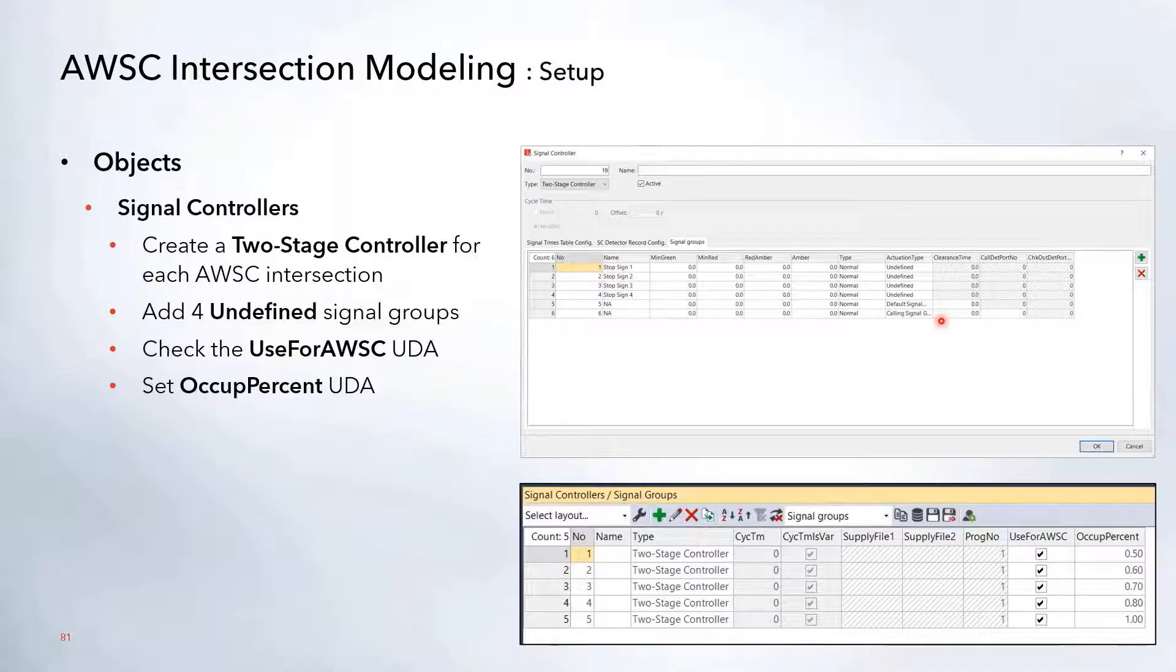Note that you still will need to have a default signal group and a calling signal group defined. However, those will not be used on the network side or in the script. On the signal controllers, the other options to select are to check this use for all-way stop control, and then here's where you can set that UDA for that occupancy percentage for the connectors for each intersection.